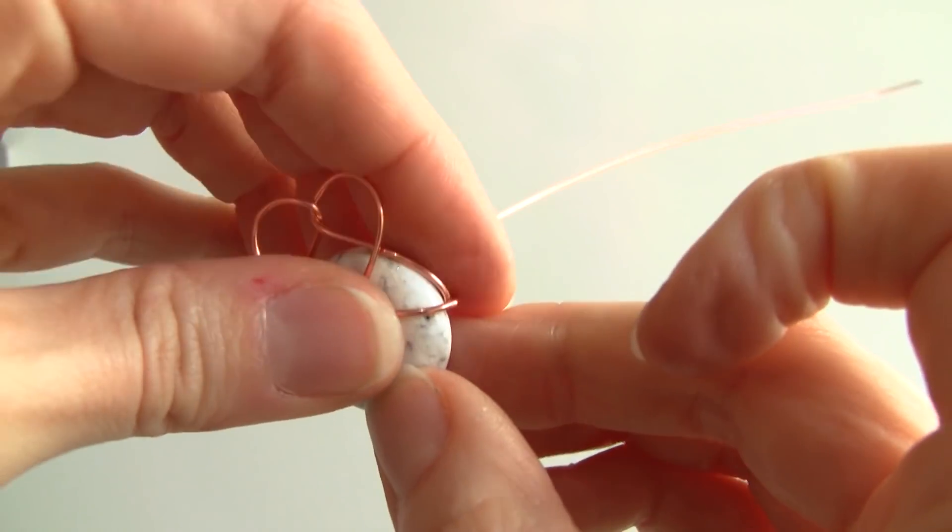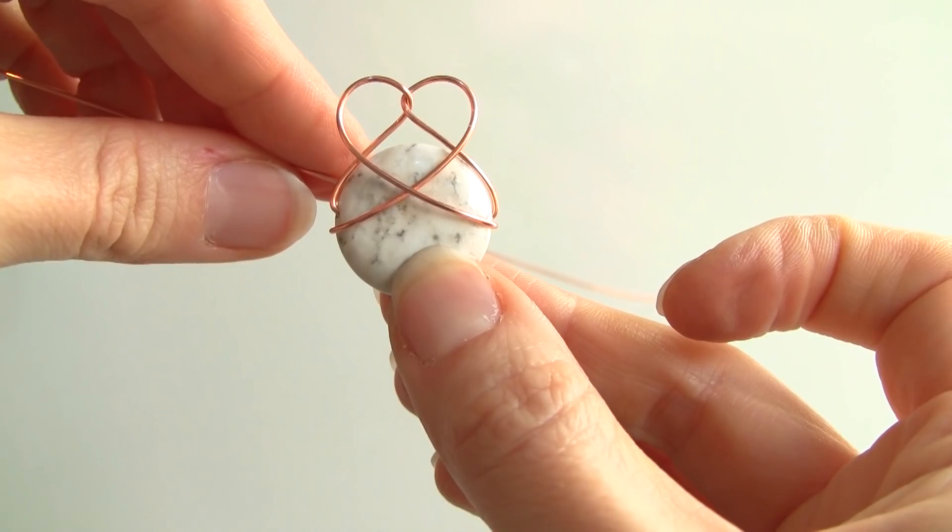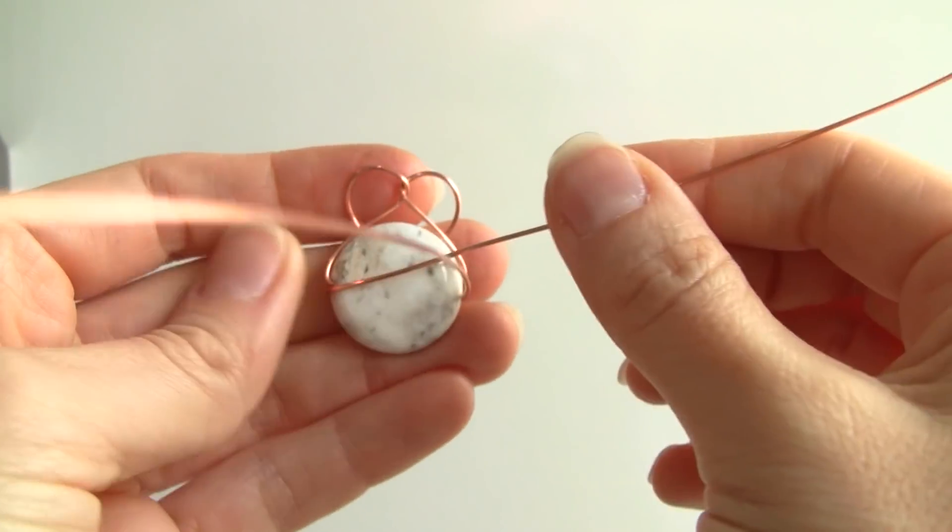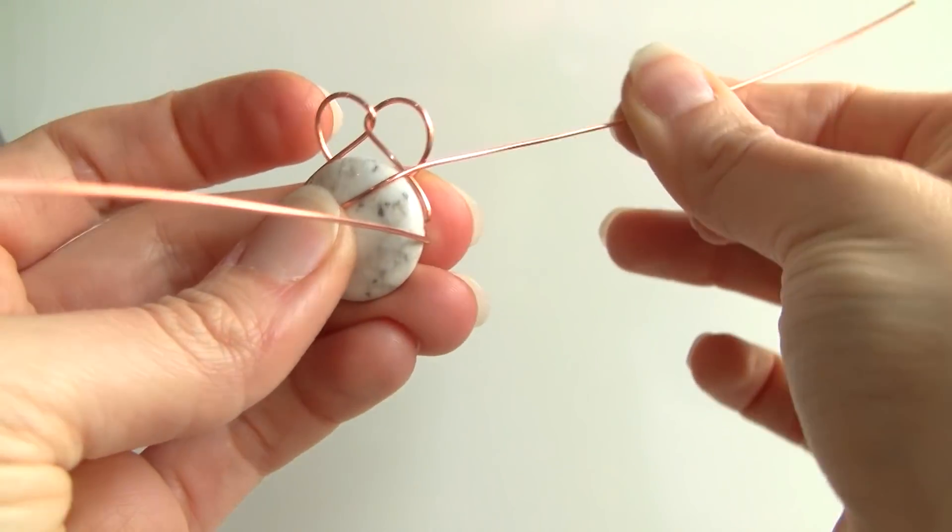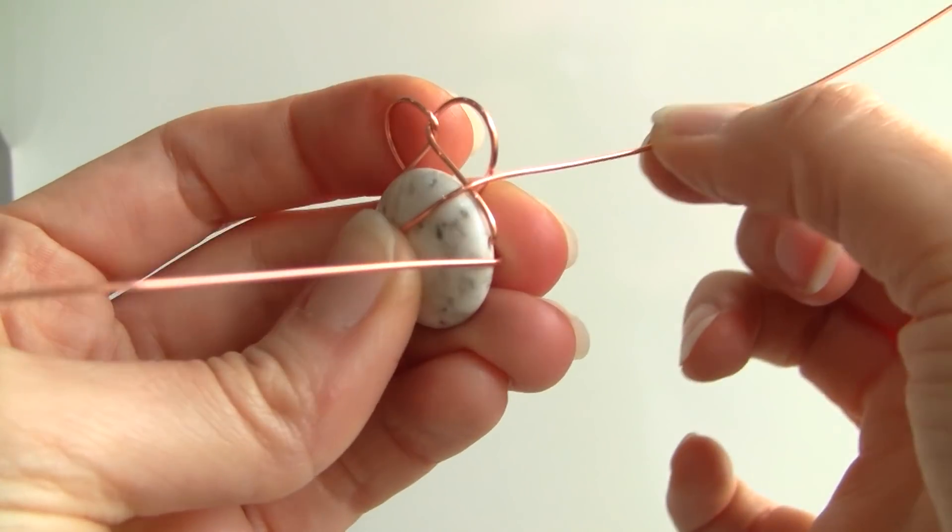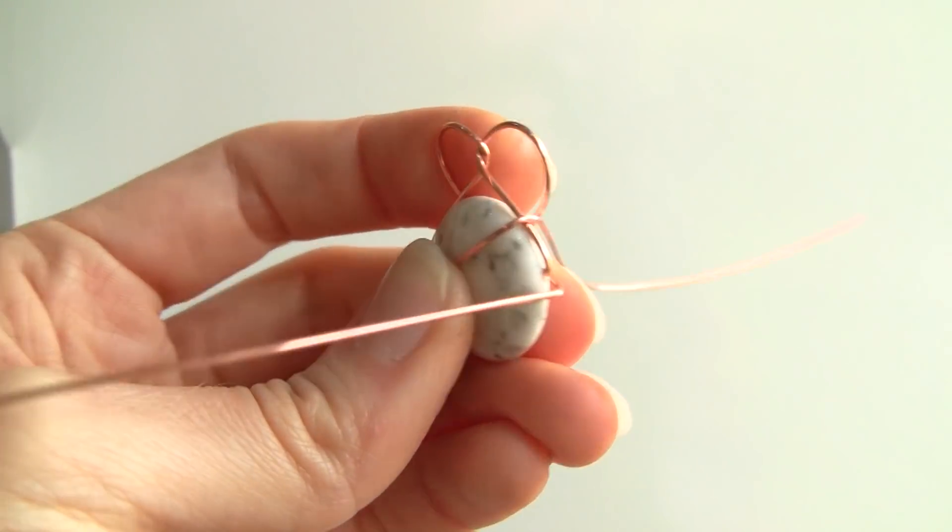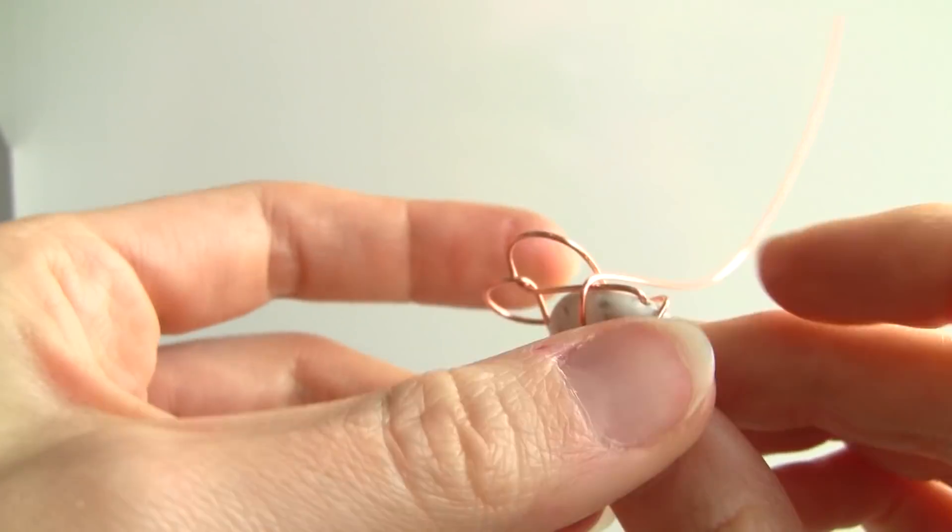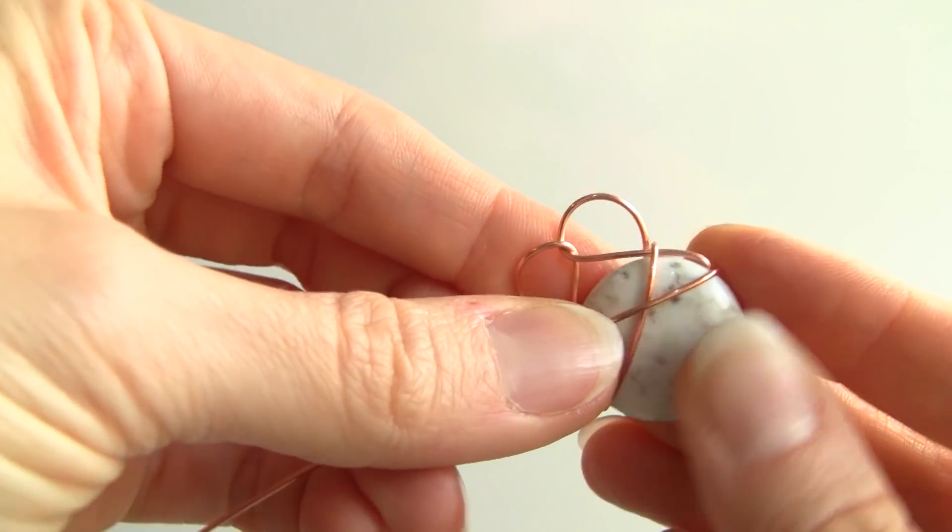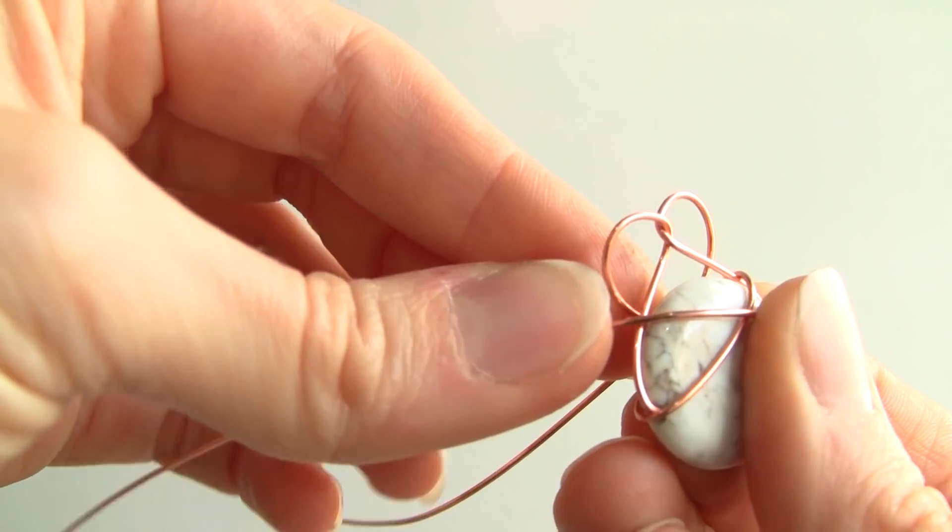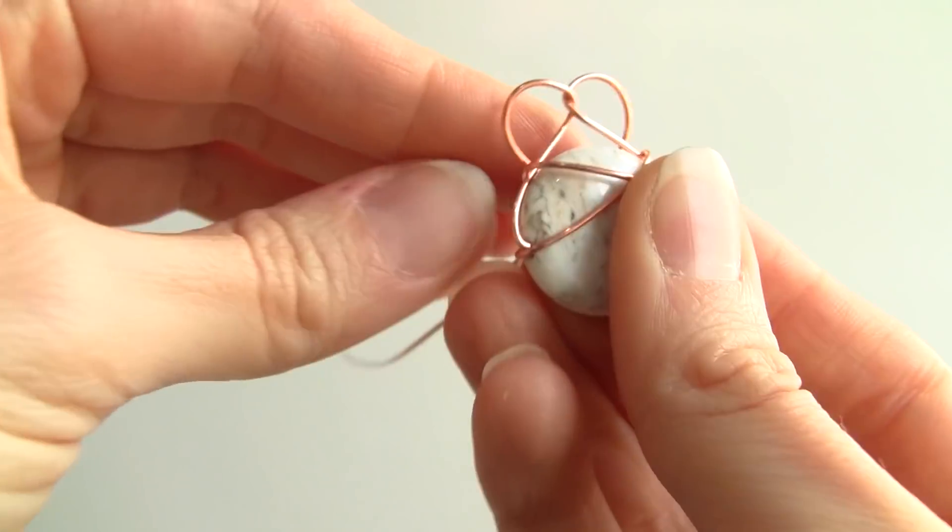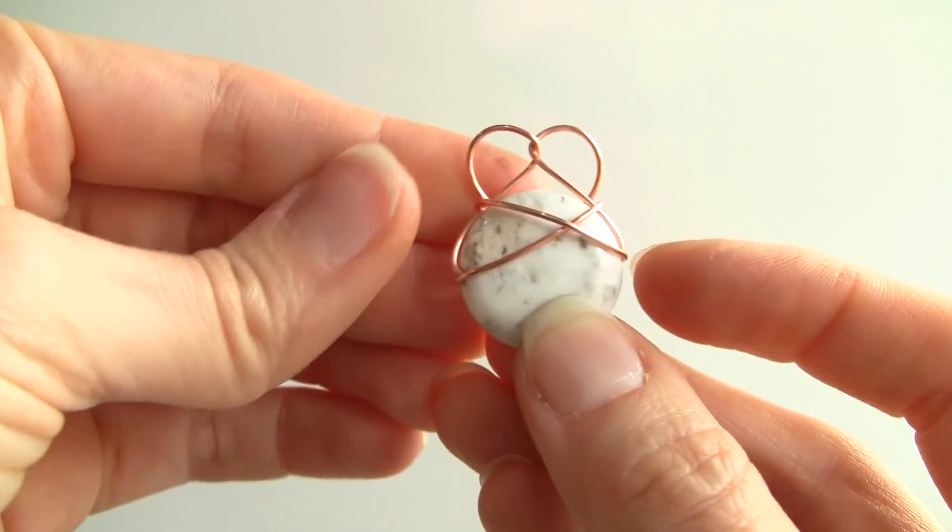Make sure your heart is looking symmetrical. And then here on the other side, go ahead and bring that wire up right to the edge of the heart and bend it forward. Same with this, bringing it up to that little edge, bending it forward.